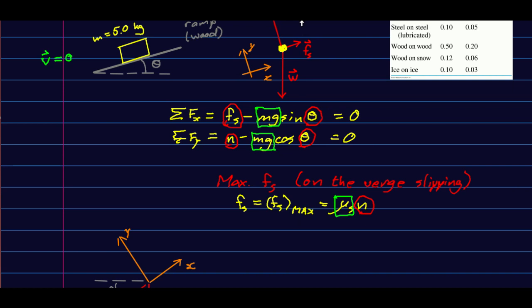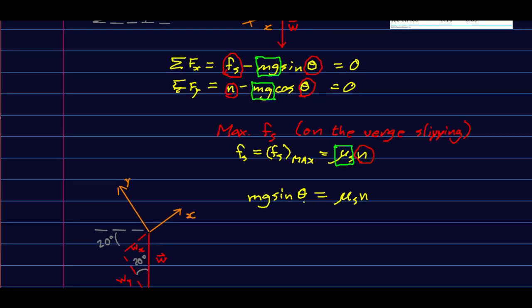And on the verge of slipping, now fs is its max value, which is mu s n. And so we're wood on wood again, so we know mu s. And so we haven't added any new unknowns now. We have three equations and three unknowns, and we can solve. So I will take my fx and I will solve it. And I'm going to say now mg sin theta, I'd like to solve for theta, is fs, which is mu s n.